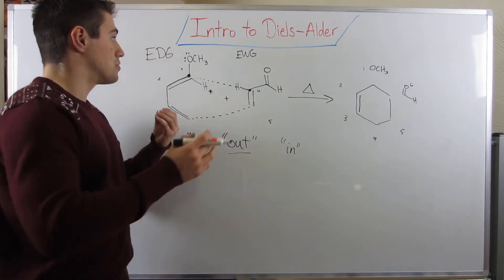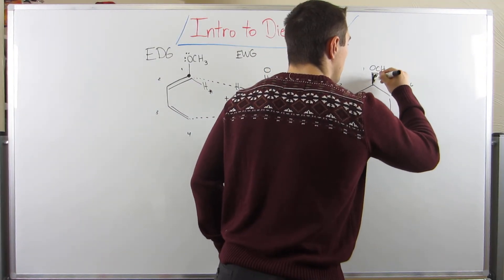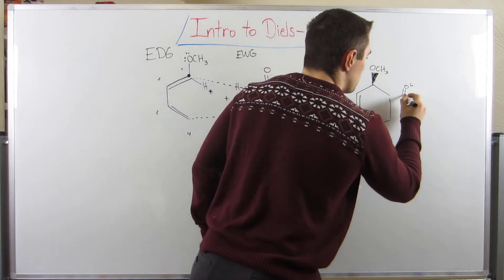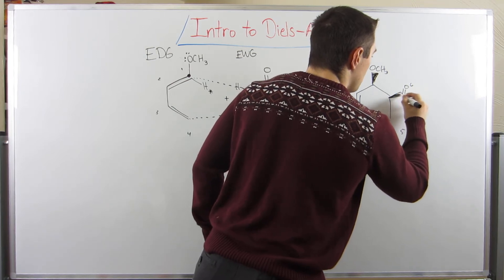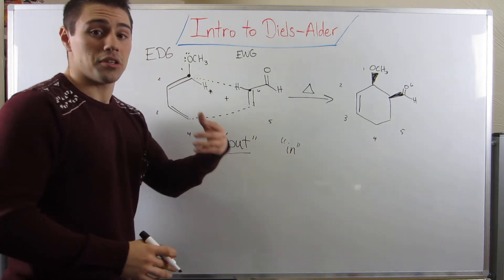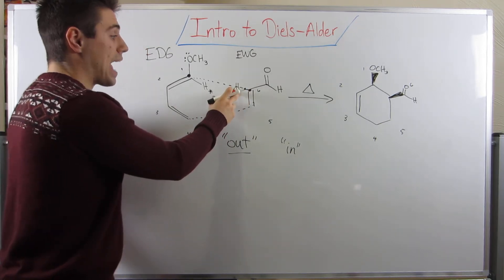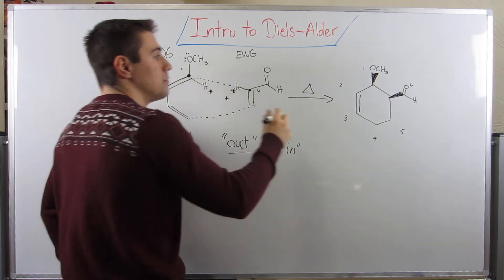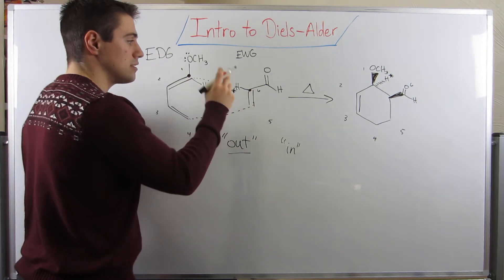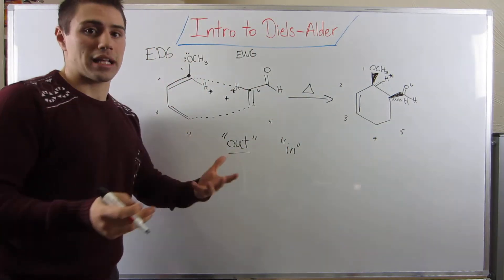Let's say I wanted to make my out-groups wedges. I would wedge this methoxy group because he's an out-group, and the aldehyde is also an out-group, so I give him a wedge as well. Since my out-groups are wedges, that means my in-groups are dashes. If I draw these asterisk hydrogens at position number one, they're dashes because they're in-groups. Same with this asterisk hydrogen - he's an in-group, so he gets a dash.